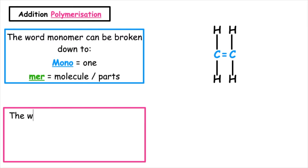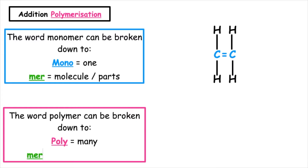The word polymer can be broken down to poly, meaning many, and mer, meaning molecules or parts. This is where we join many monomer units together to form one long polymer chain.